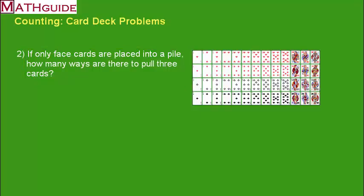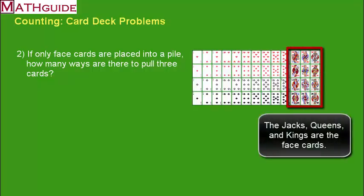If we just take a look at the face cards, the face cards are the Jack, the Queen, and the King. And what we want to do is put them all in a pile. Well, you can see there's 4 different suits, 3 different types of cards. That's 12 cards.